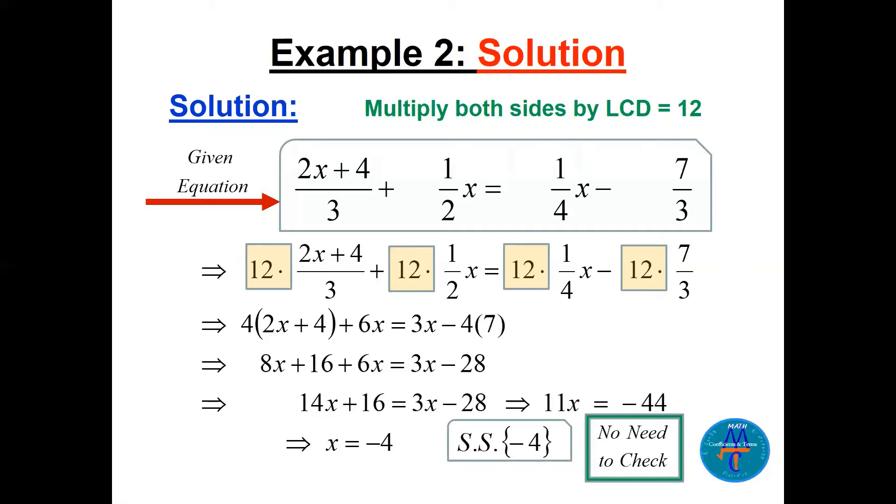So 12 divided by 3, 4, times this bracket. You have to multiply, you see? 12 divided by 2, 6, multiply by this x. 12 divided by 4, 3x is there, minus 12 divided by 3, 4 times the 7, 28 here. Now you distribute the 4, 8 and 16. Simplify the x, so easy you can do that. So 11x equals minus 44.